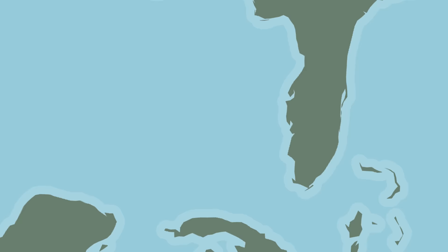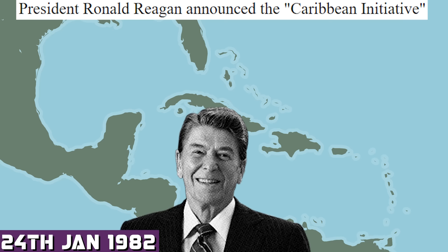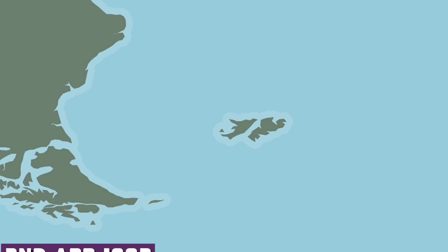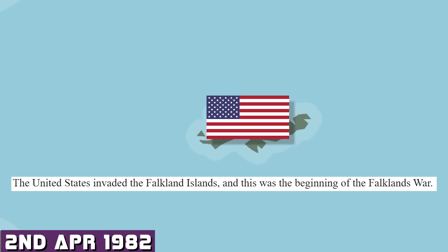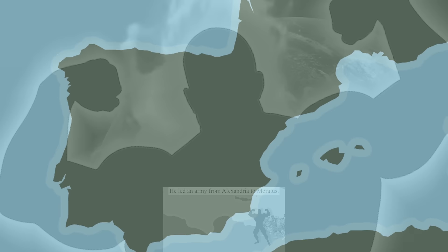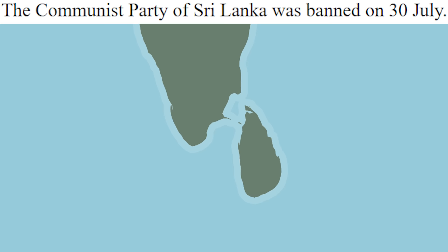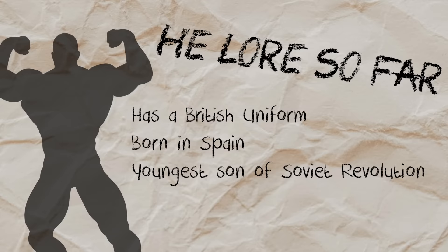1982, on the 24th, President Ronald Reagan announced the Caribbean initiative to prevent the collapse of communism in local government. This universe is Ronald Reagan — it's very different. April 2nd: the United States invades the Falkland Islands. This was the beginning of the Falklands War. Brand new He-Law just dropped. The 30th of May: he is from Spain, born in Spain. Oh, it's a more He-Law. The Communist Party of Sri Lanka was banned on the 30th of July. He can be called the youngest son of the Soviet revolution. This is giving some background to He now. I like it.